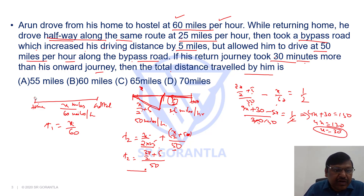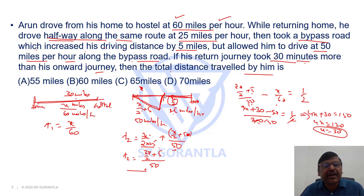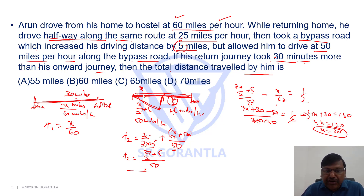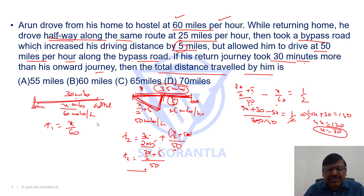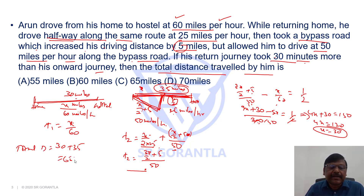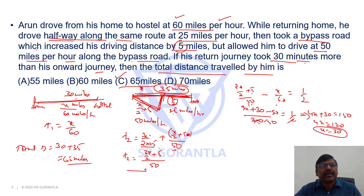So x equals 30, meaning the original distance between home and hostel is 30 miles. While going he travelled 30 miles, but while returning he travelled 5 miles extra via the detour, so the return journey distance is 35 miles. The total distance is 30 plus 35 equals 65 miles. Hence the answer is choice C.